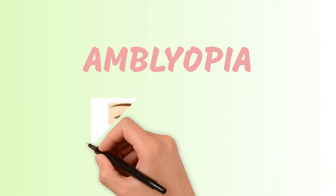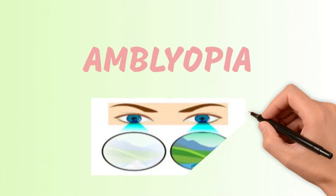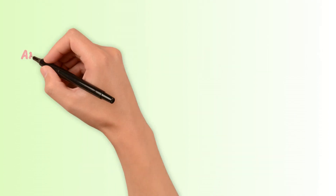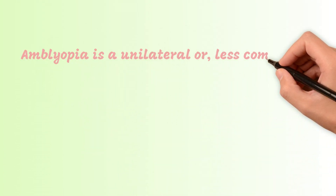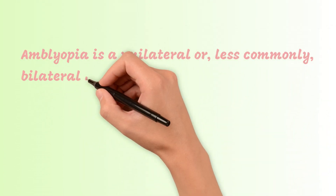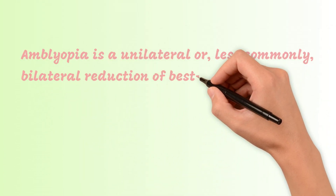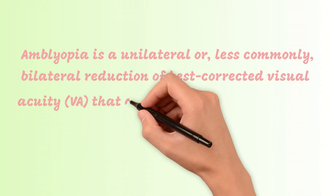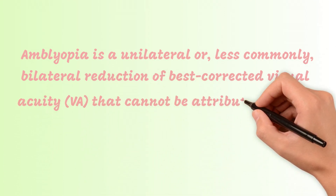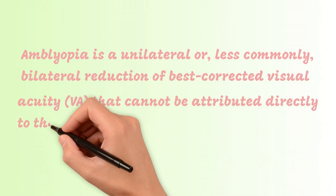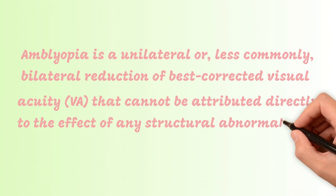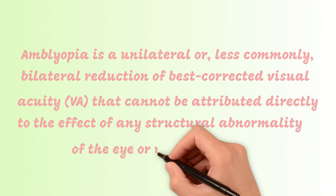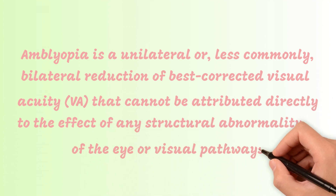This video will talk about amblyopia. Amblyopia is a unilateral or, less commonly, bilateral reduction of best corrected visual acuity that cannot be attributed directly to the effect of any structural abnormality of the eye or visual pathways.